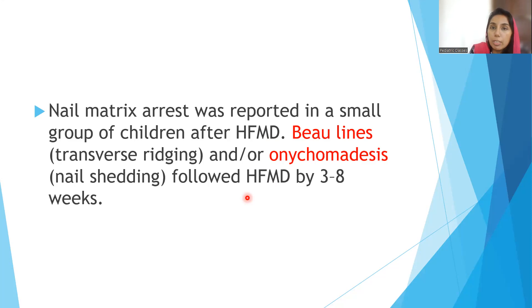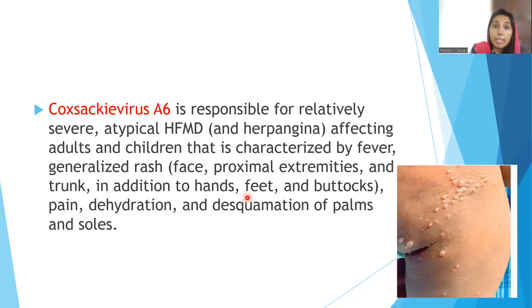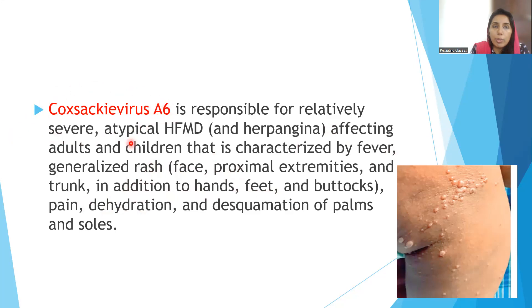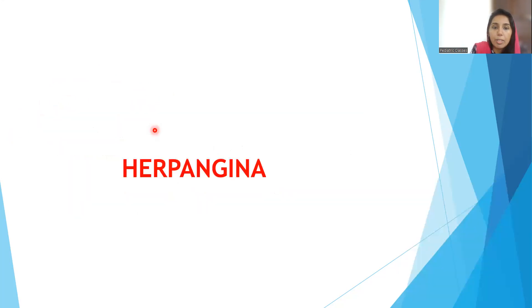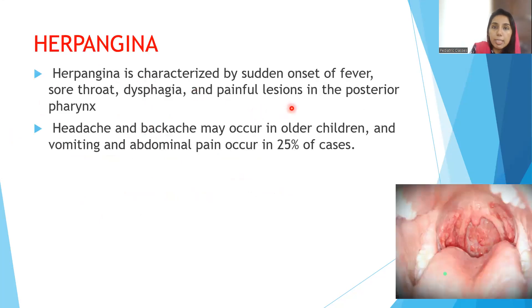Parents may bring the child saying there is shedding of nails — don't think it is fungal. Look at both upper and lower limbs. If all fingers are involved and the history of hand foot mouth is positive, definitely consider onychomadesis. Coxsackievirus A6 is responsible for severe atypical HFMD and herpangina, characterized by fever, generalized rash on the face and proximal extremities in addition to hands and buttocks, pain, dehydration, and desquamation of palms and soles. For PG exam aspirants: the causative organism for atypical HFMD is coxsackievirus A6.